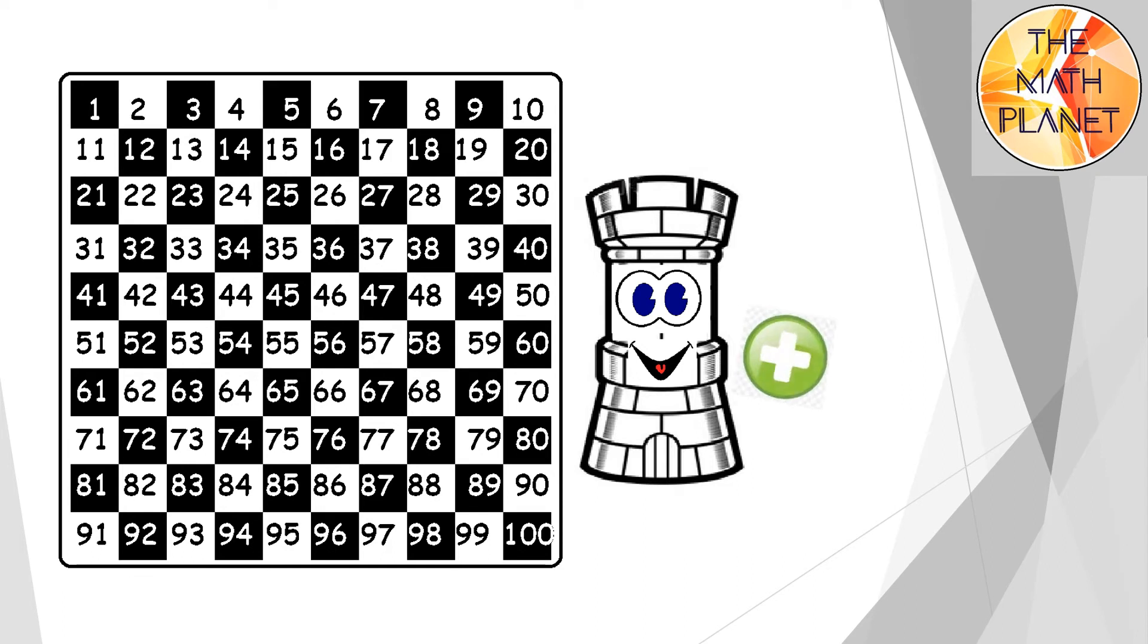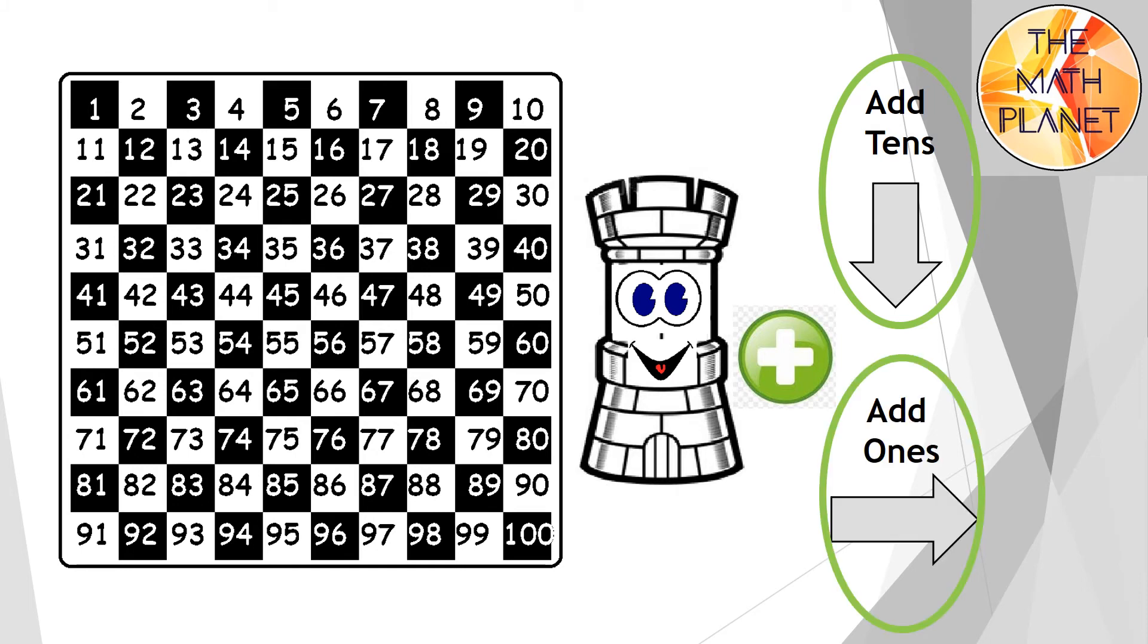So here's the hundred chart and since we will add, I will only move in two directions. To add tens, I'll move down the chart. To add ones, I'll move to the right of the chart.